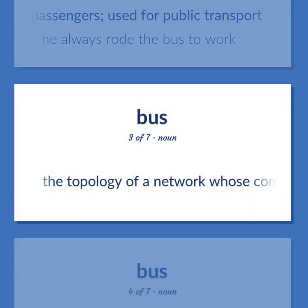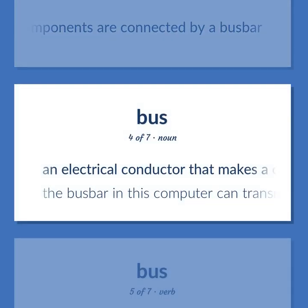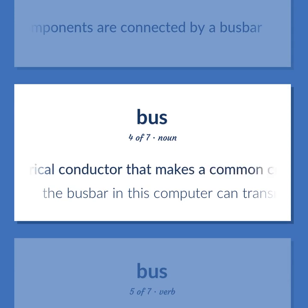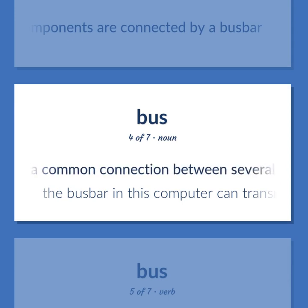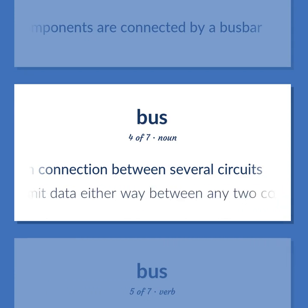BUS: The topology of a network whose components are connected by a bus bar. An electrical conductor that makes a common connection between several circuits. Example: The bus bar in this computer can transmit data either way between any two components of the system.